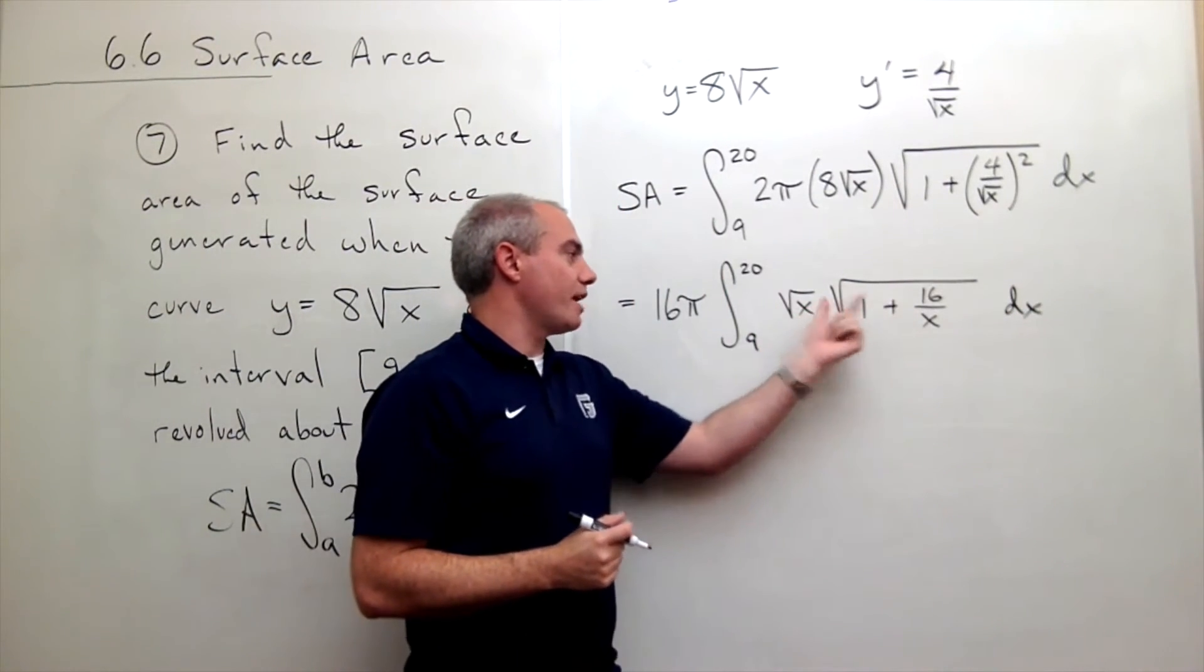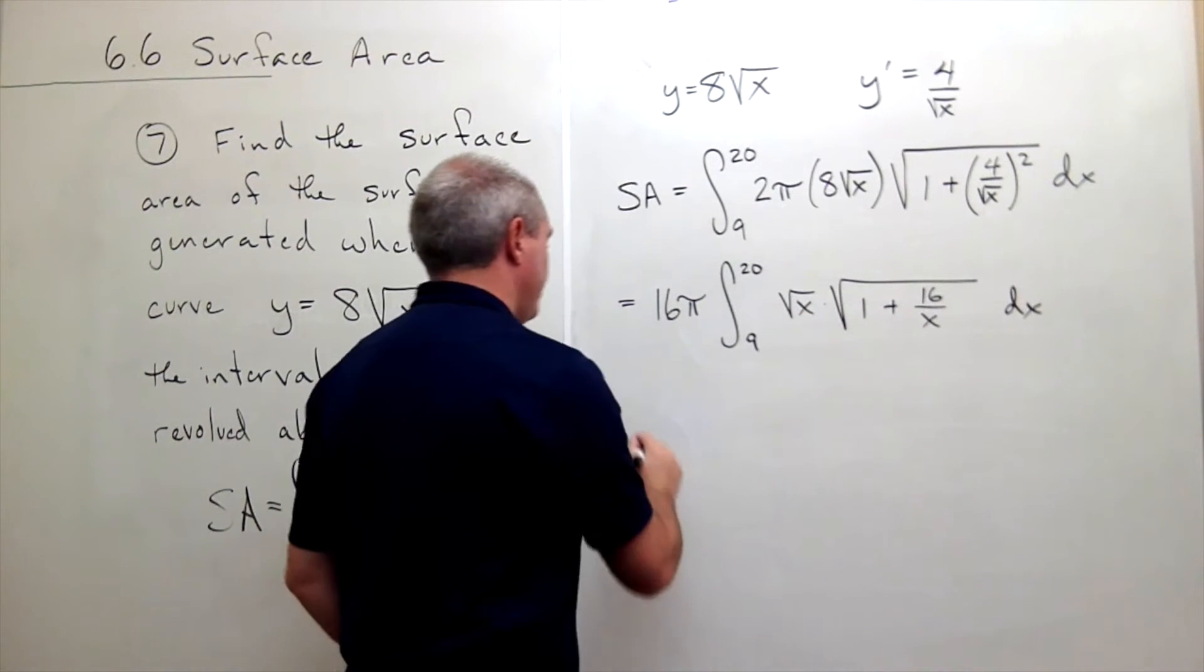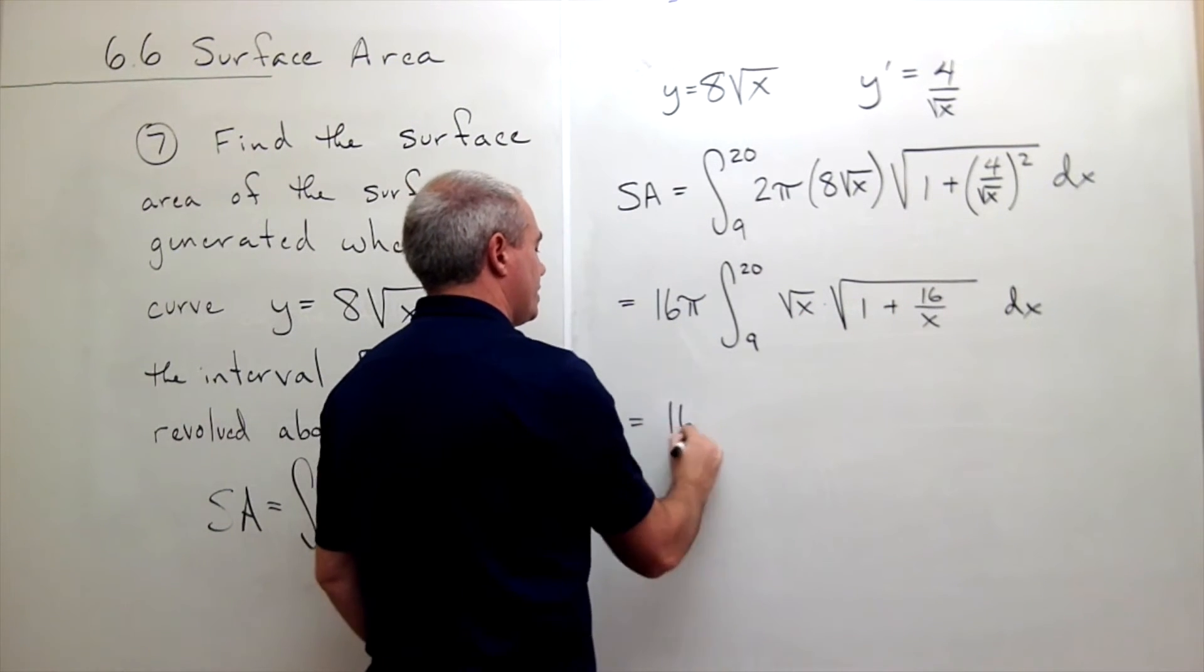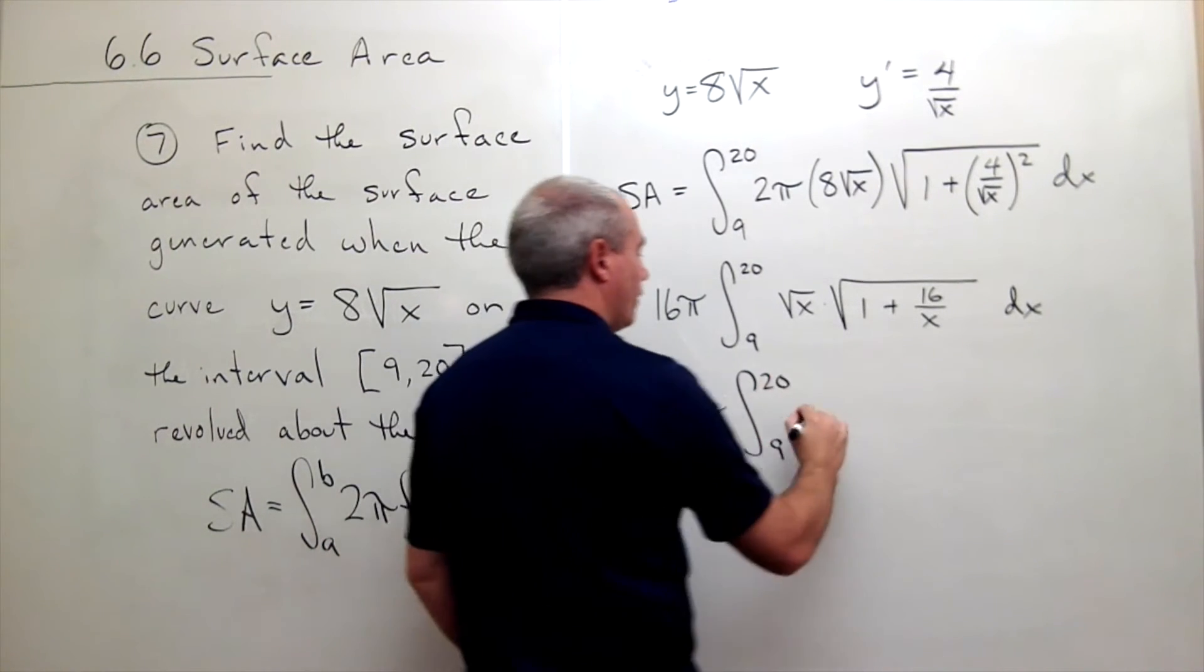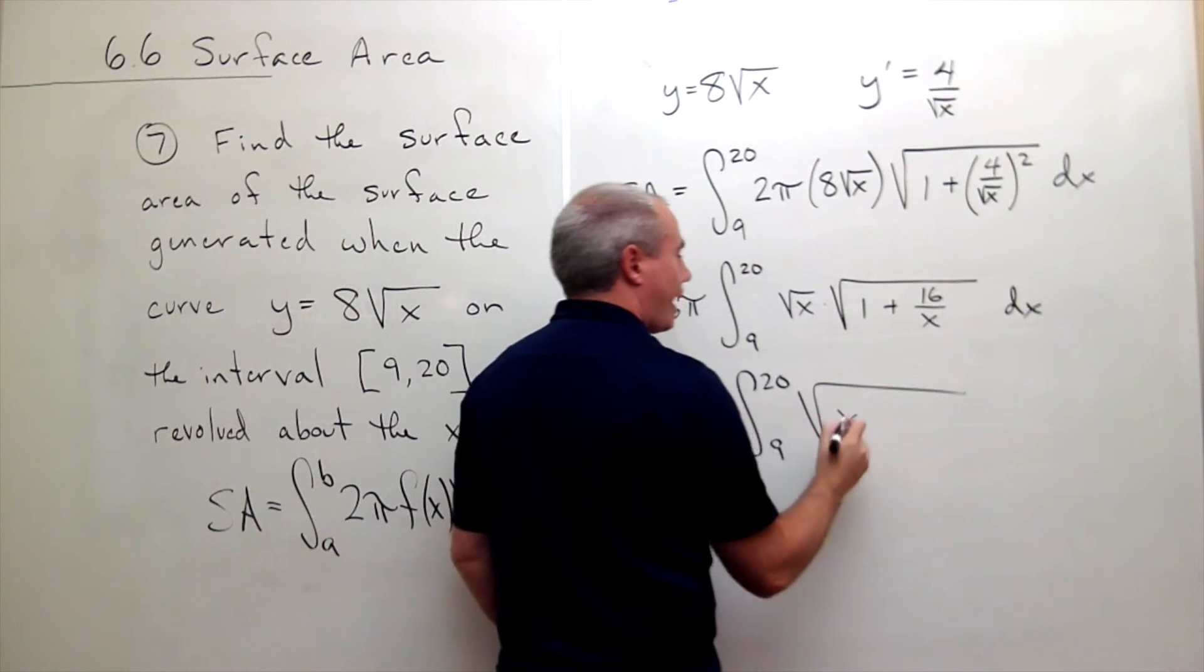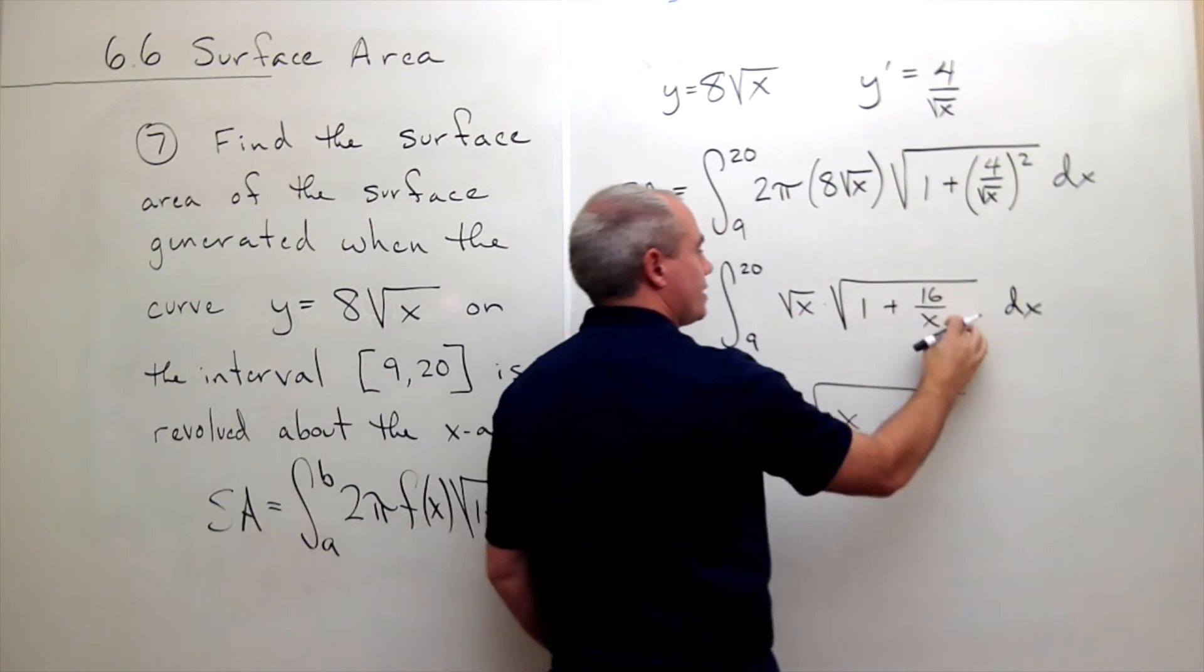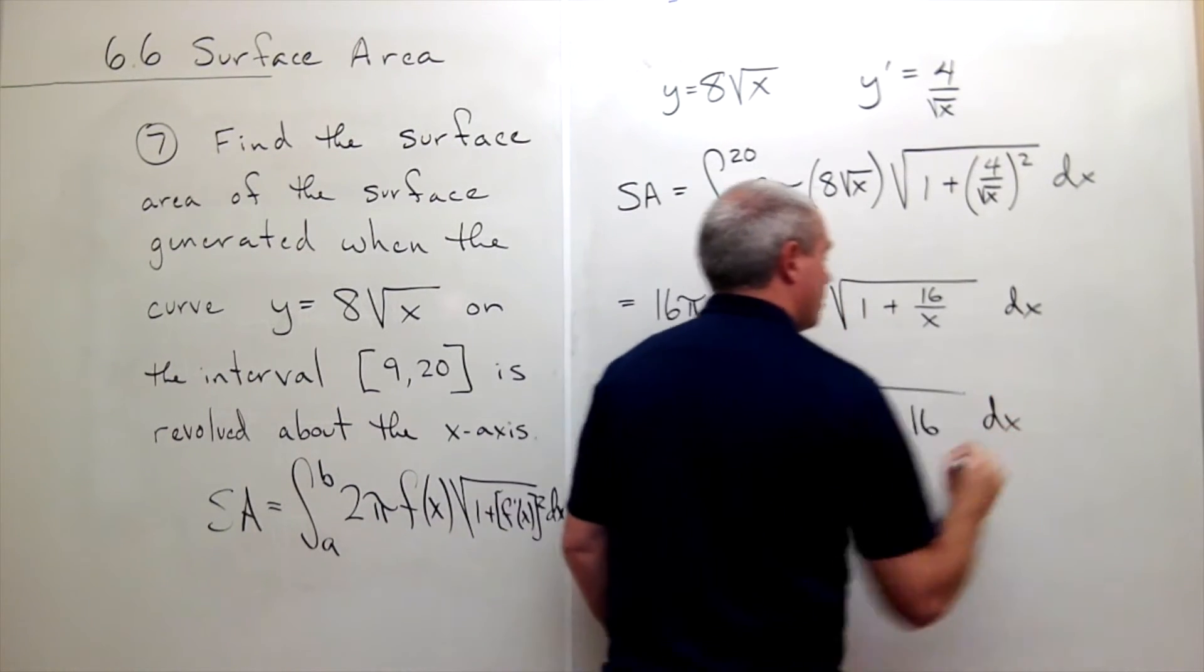Since I have a square root times a square root I could put that x inside this square root. If I do I get 16π integral from 9 to 20 of the square root, so just multiply x by 1 to get x, multiply x by 16 over x to get 16 dx.